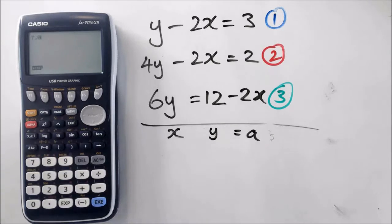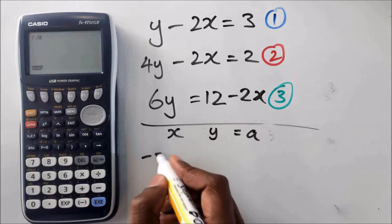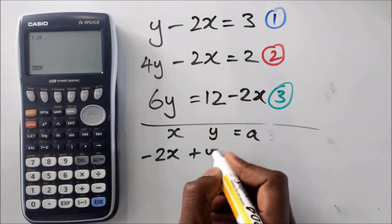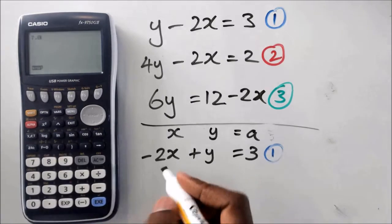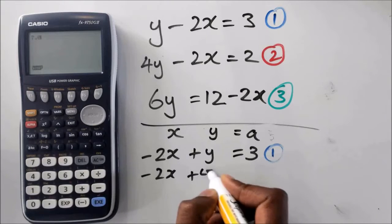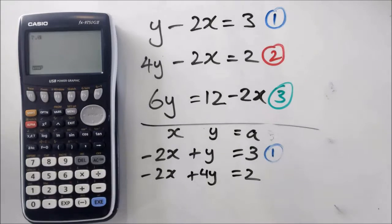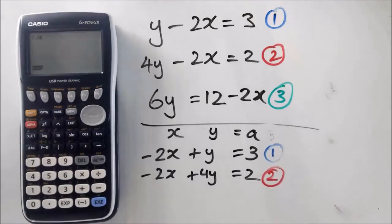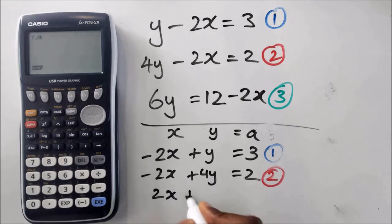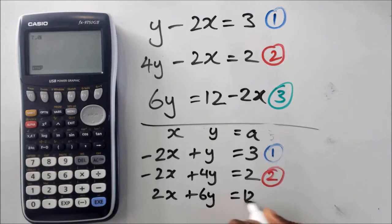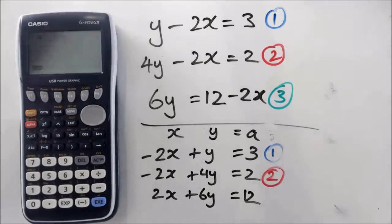So I'm going to rearrange equation 1. Equation 1 is going to be negative 2x plus y equals 3. Equation 2 is going to be negative 2x plus 4y equals 2. And then the third one, I'm going to get 2x plus 6y equals 12.